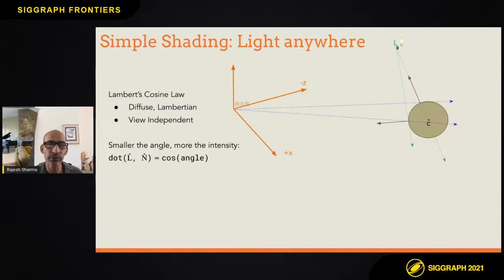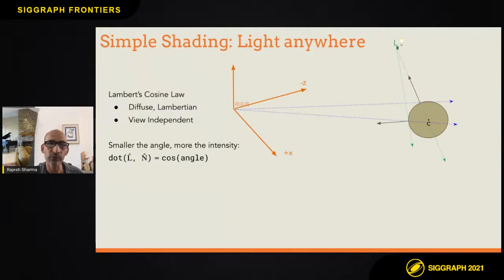Those kinds of objects that behave that way are Lambertian or diffuse, where the shading is not dependent on the viewing angle. In general, shading is dependent on the viewing angle as well as the location of the light. But for diffuse or Lambertian surfaces, it's pretty straightforward — we just use the cosine of the angle, which gives you the relative area essentially.